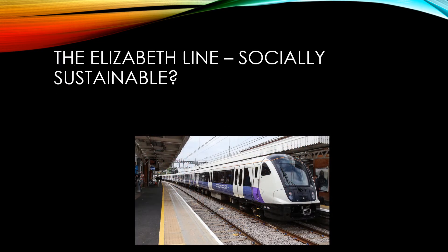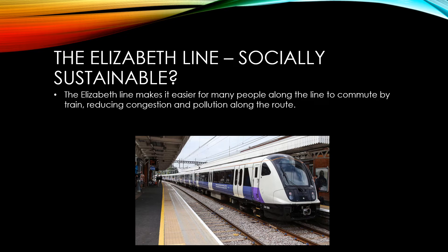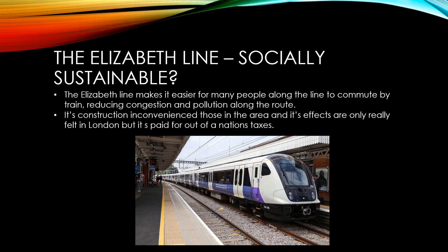Returning to our example of the Elizabeth line, in terms of social sustainability, it does make it much easier for people along the route of the new line to commute by train. This will reduce congestion and pollution along the route. On the negative side, during its construction, those that live in the area, particularly where the work was above ground or where there were new stations put in, were inconvenienced. But probably the most significant social consideration is that its effects are really only felt in London, but it's paid for out of national taxes.